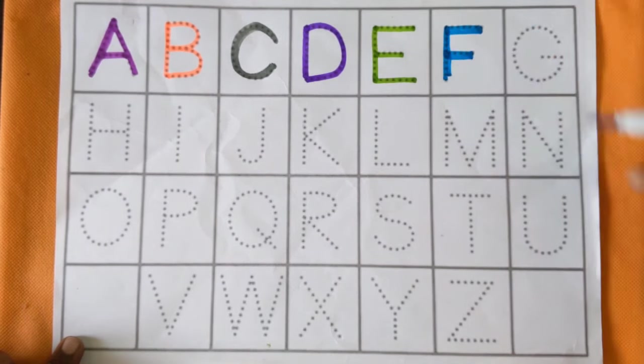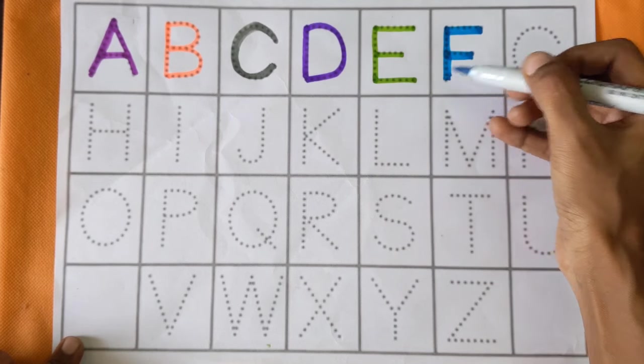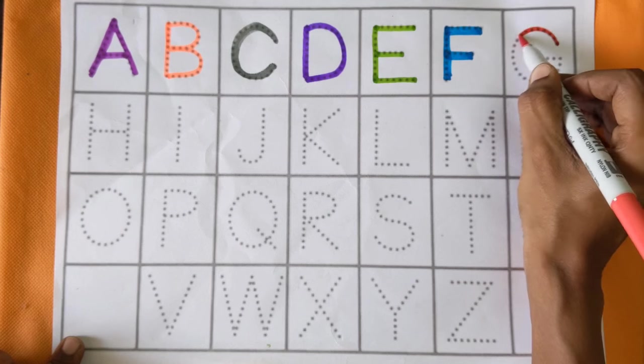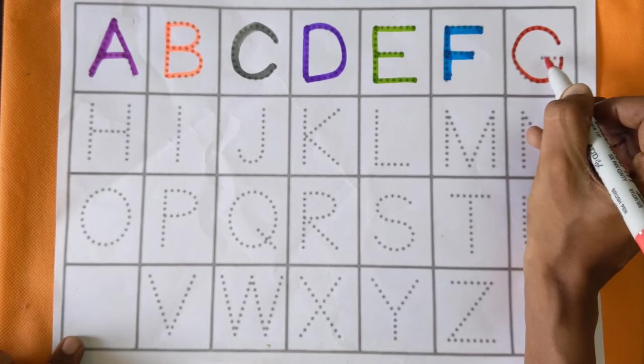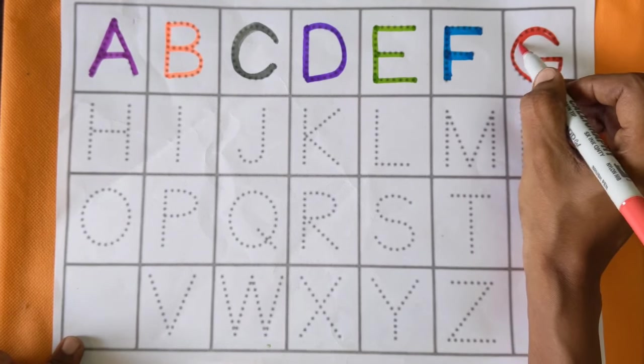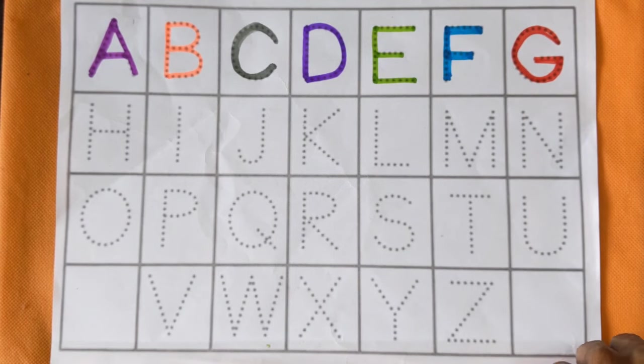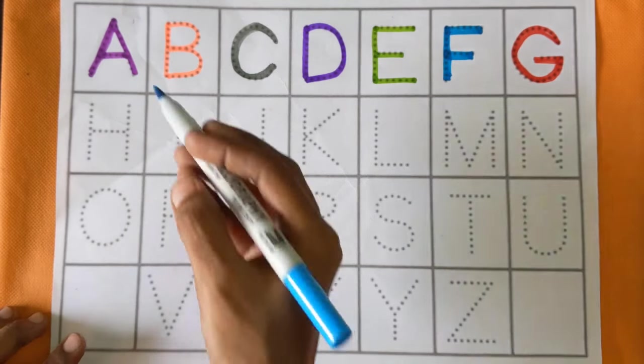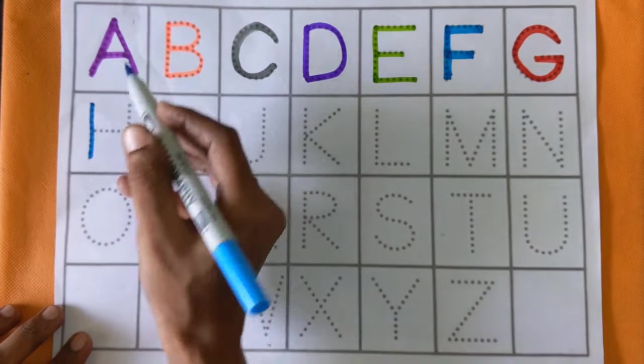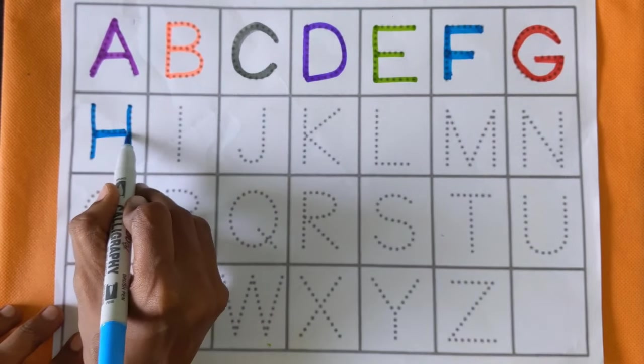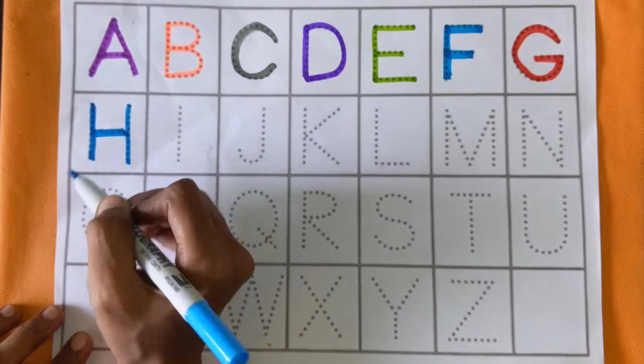After F, next is alphabet G. G for god and G for girl, red color. After G, next is alphabet H. H for hamster and H for home, sky blue color.